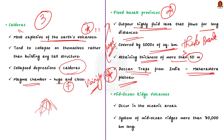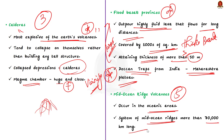The final type is mid-ocean ridge volcanoes. These volcanoes occur in the oceanic areas. There is a system of mid-ocean ridges more than 70,000 kilometers long that stretches through all the ocean basins. The central portion of this ridge experiences frequent eruptions. That's all about this news article. We have discussed an important geography topic from a prelims perspective — the volcano and its types.